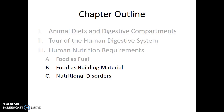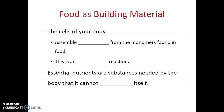Next, let's talk about food as a building material. The cells of our body assemble polymers from the monomers that we get by digesting our food. This process of building up polymers from monomers is an endergonic reaction. So some of the energy we get from digesting our food can go right back into building up macromolecules within our body. Essential nutrients are substances — building blocks — that are needed by the body but that the body cannot make itself.